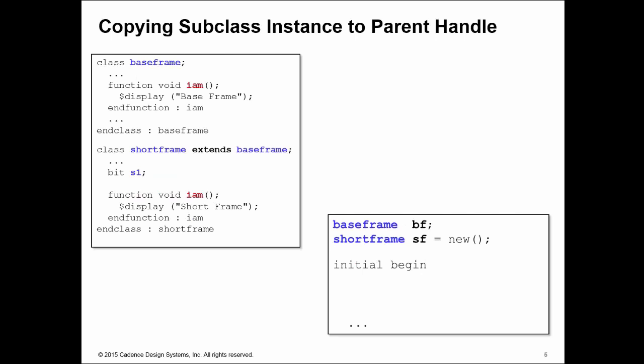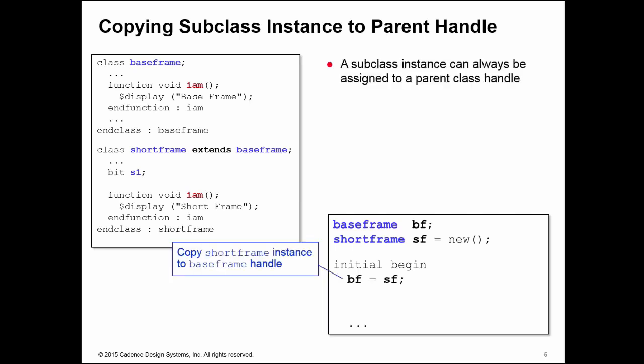Here we have two classes: base frame and a subclass called short frame. Both have a simple function called 'iam' which tells us which class they are. Short frame also has an additional property called s1. Two handles are created on base frame and short frame, and an instance of short frame is created in the handle sf by calling the constructor. That short frame instance can then be copied to the parent class handle — you can always copy a subclass instance to a parent class handle.